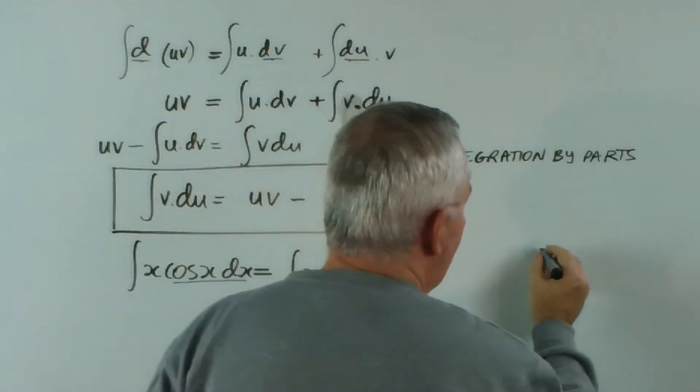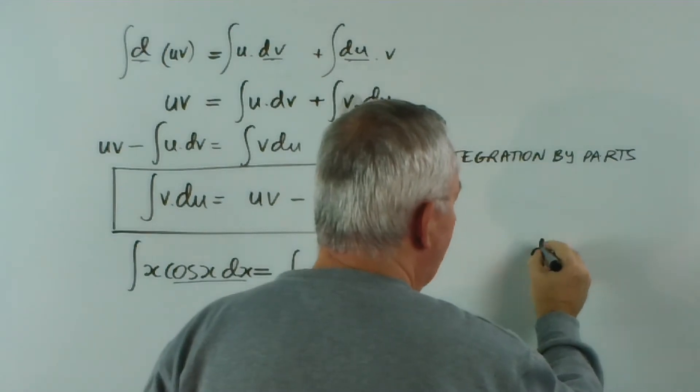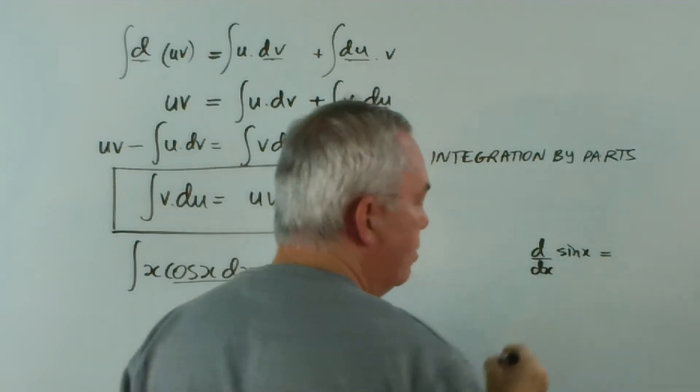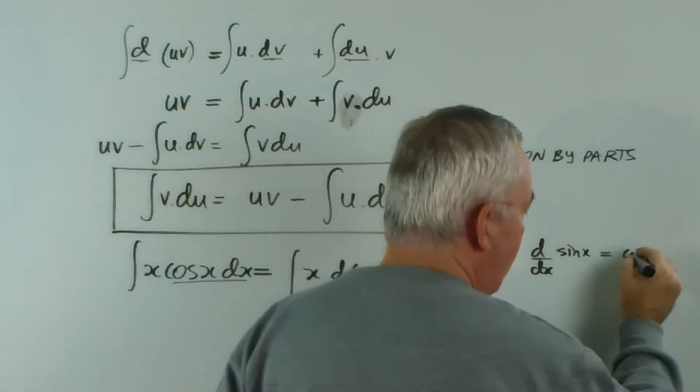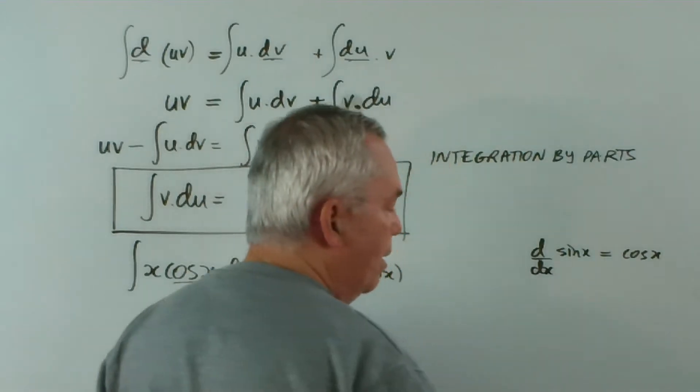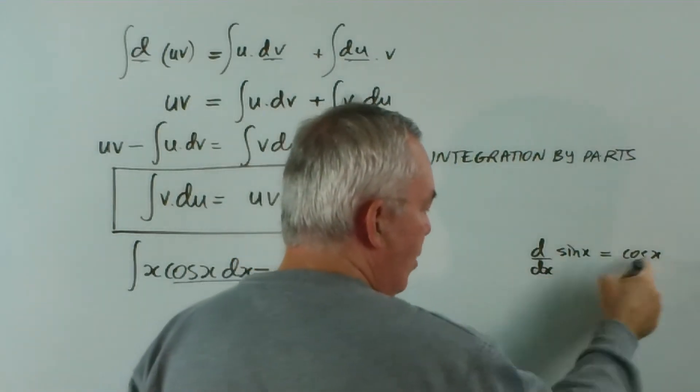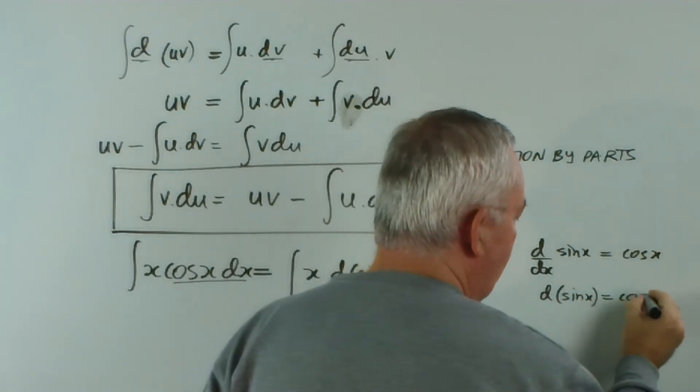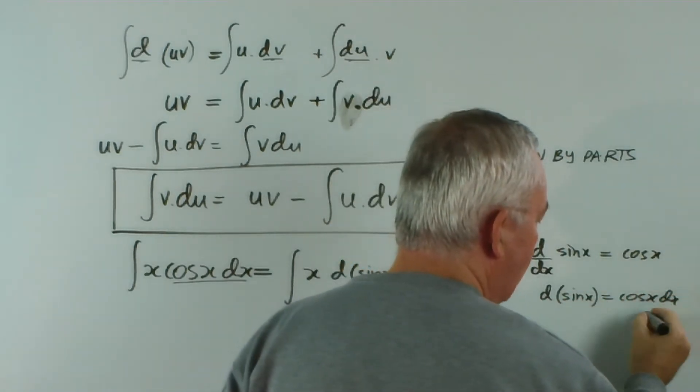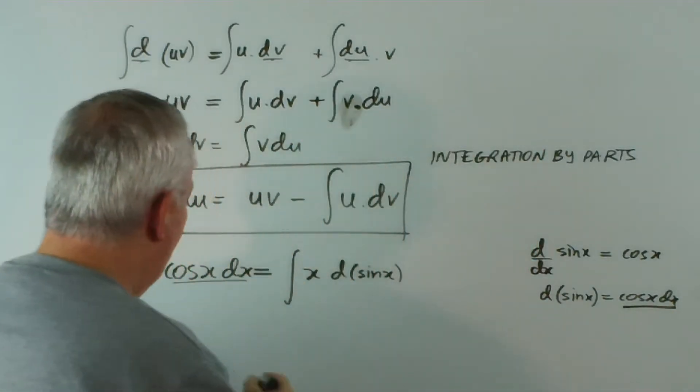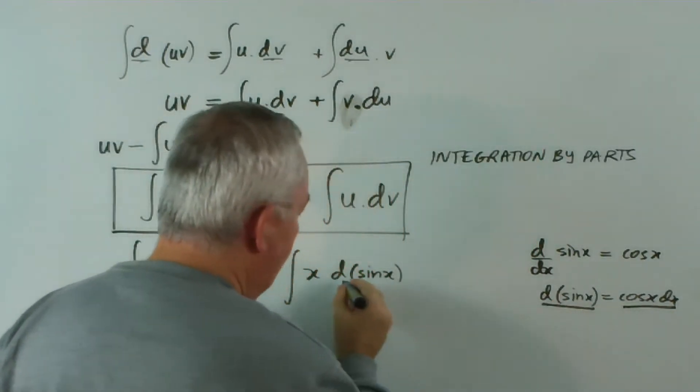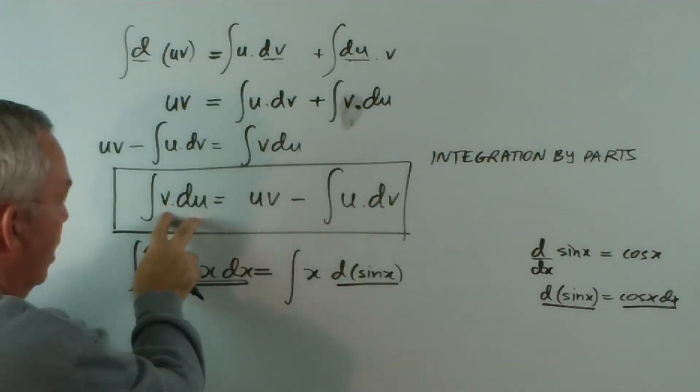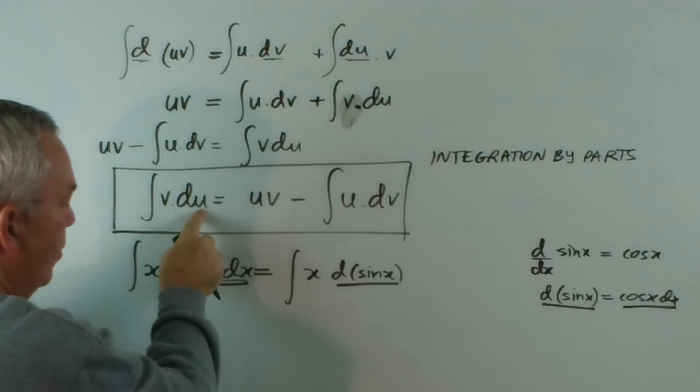Have a look at this. The derivative of sine x is - I think you'll agree - the cosine of x. That means, if I multiply both sides by dx, I get d(sin x) equals cos x dx. So I can replace that cos x dx with the derivative of sine x. And now it's in this form - I have a function times the derivative of another function.